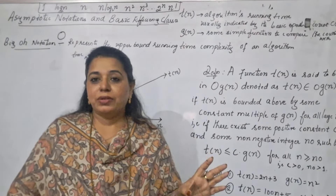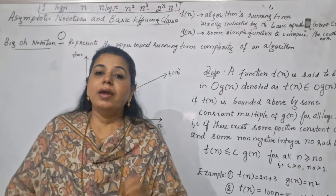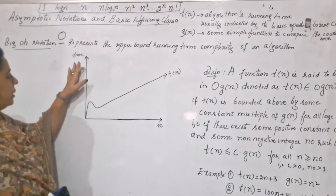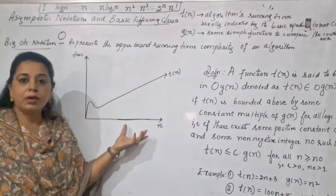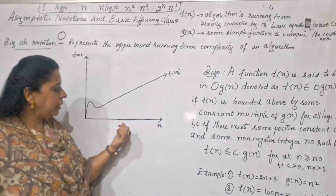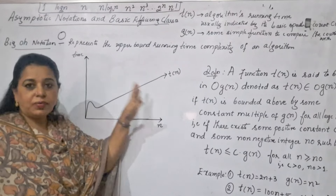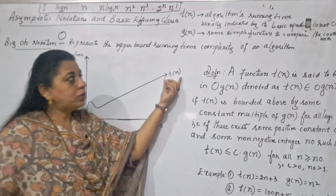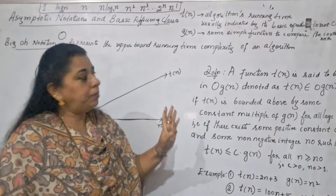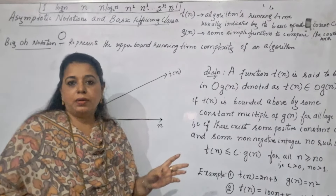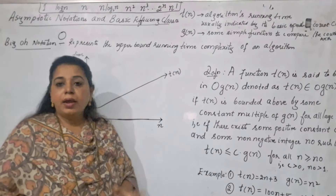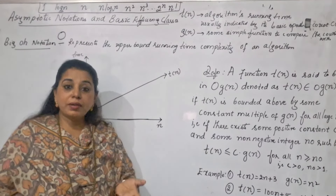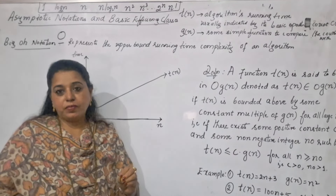Now what you have to understand is how you are using this Big O notation to express the running time of an algorithm. Here is a graph showing time versus n, where n is the input. As the input increases, you can see the algorithm behaving in a certain manner — let us assume it has a linear behavior, and this is the function t(n). t(n) is the algorithm's running time, usually indicated by its basic operation count. How to find the basic operation? It is the one contributing most to the running time — any statement inside a loop that gets executed many times.